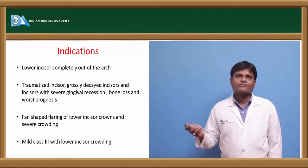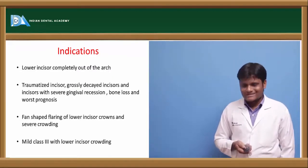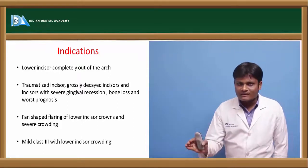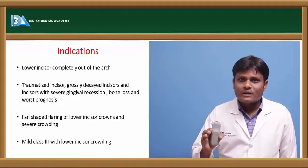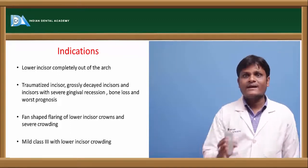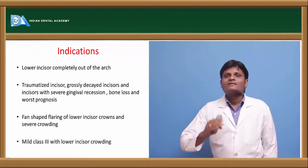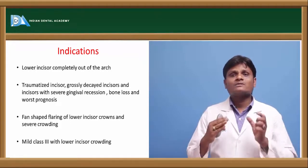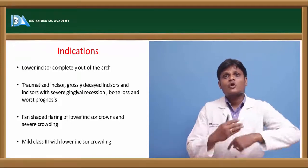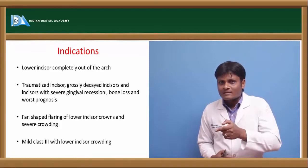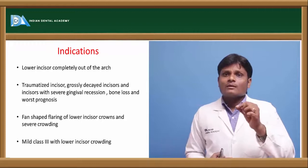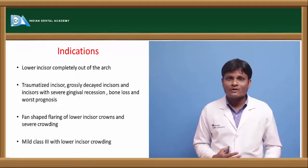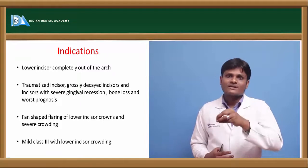Usually we avoid mandibular incisor extraction because it causes collapse of the lower arch, compensatory collapse of the maxillary arch, and midline shift. But in cases where there is severe crowding of the lower anteriors and the space requirement is not more than the width of the incisor, we will extract the mandibular incisor. Which mandibular incisor? The one having a poor prognosis, which is severely traumatized, severely out of the arch, or has severe periodontal involvement and very poor prognosis — that tooth will be extracted for orthodontic purposes.